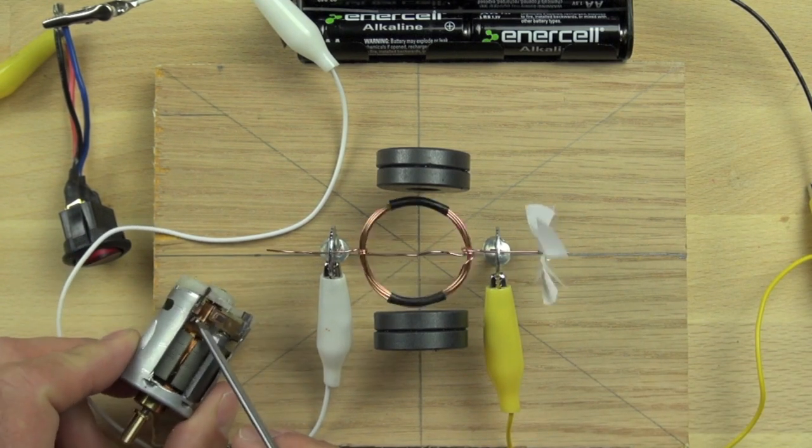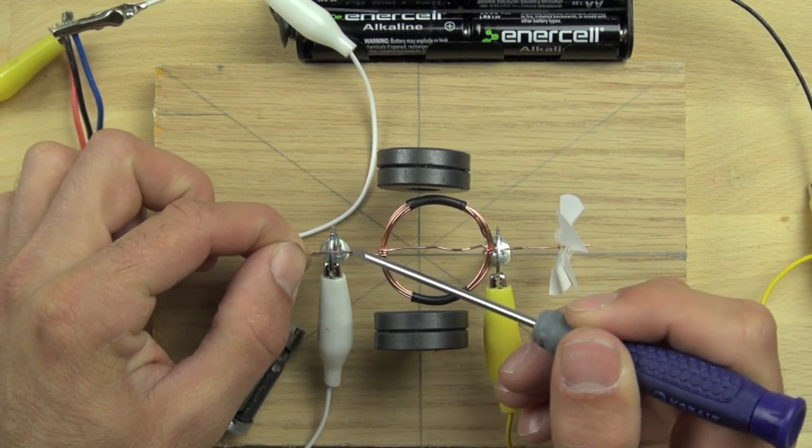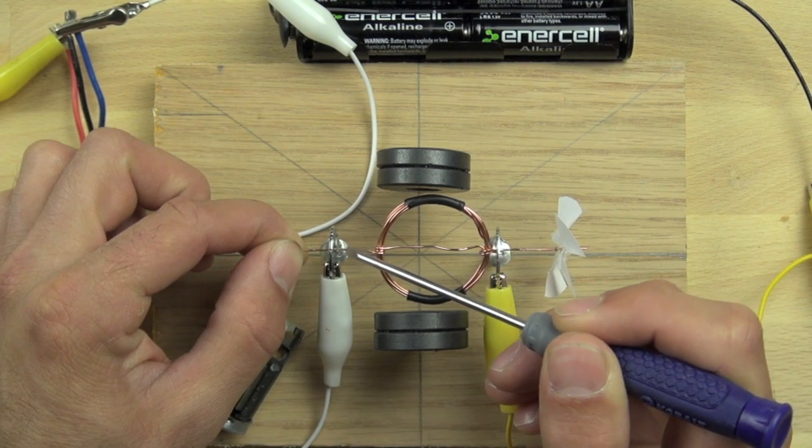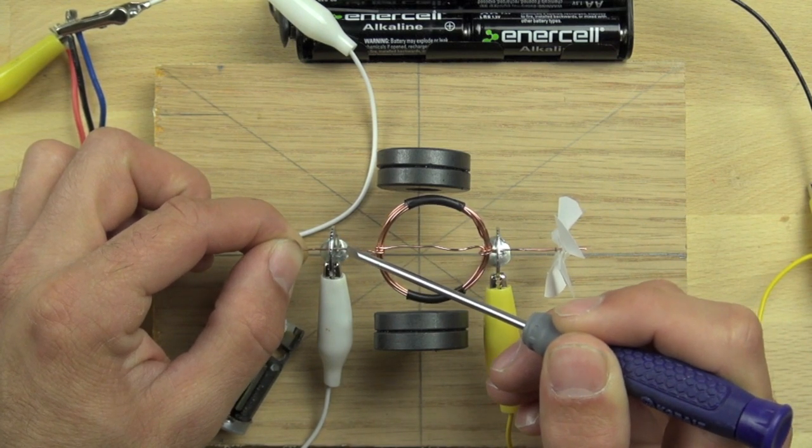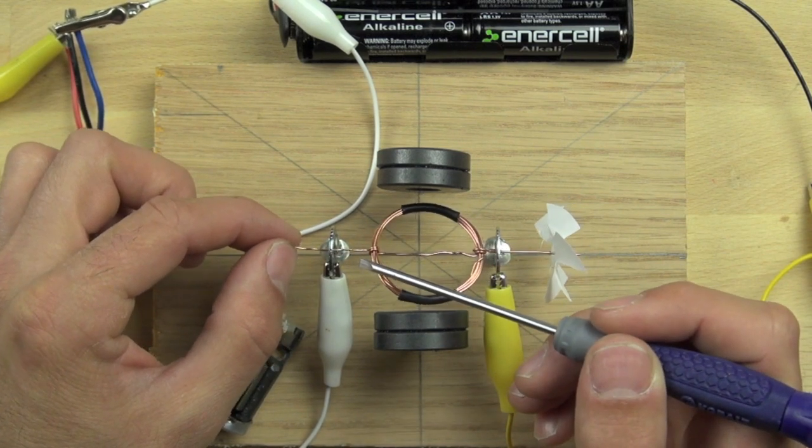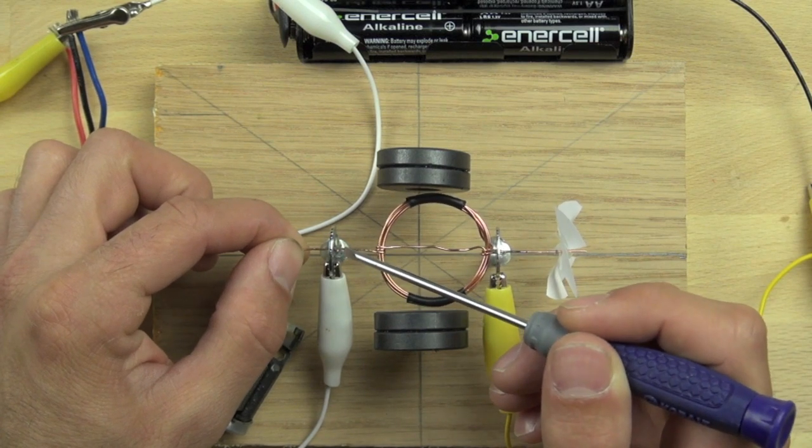Now the commutator here is actually rather hard to see, but it is the copper wire here that's been stripped. So we stripped away the insulation on the copper wire on this side, but we left it on this side. Now the insulation is actually a clear lacquer, so it's hard to see, but we did strip that away with a knife.